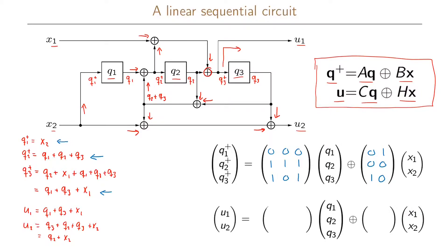For the output functions: u1 equals q1 + q3 + x1, so we write one zero one in the output state matrix row — since it doesn't depend on q2 — and one zero in the output input matrix row. For u2 equal to q2 + x2, we write zero one zero in the second row of the output state matrix and zero one in the output input matrix.